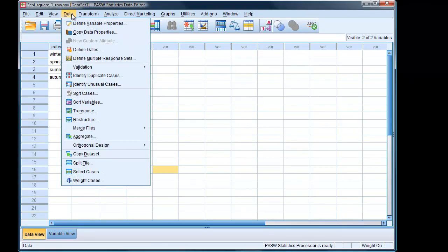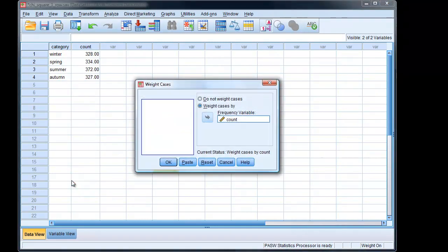Obviously, the important thing is to make sure that we're weighted by our count variable. So we go to weight cases, and we have weight cases by, frequency variable is the count variable.